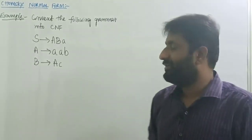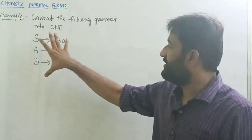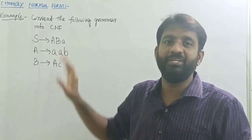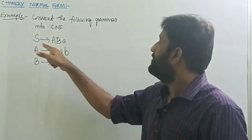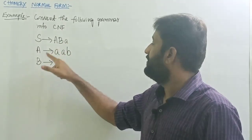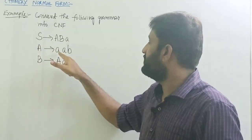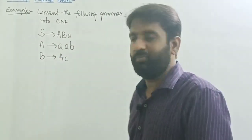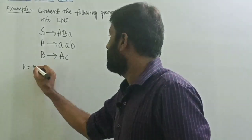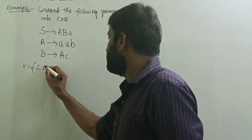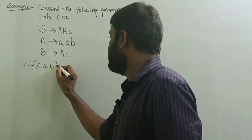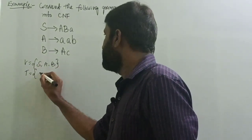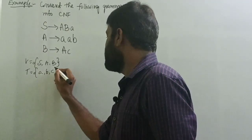Welcome back. The given grammar I'm asking you to convert into Chomsky Normal Form is: S tends to aBAA, A tends to AAB, B tends to AC. The variables in the grammar are A and B, and the terminals are small a, small b, and small c.